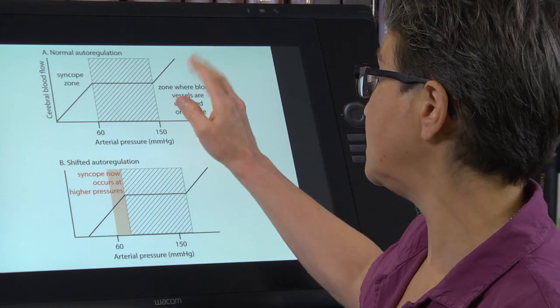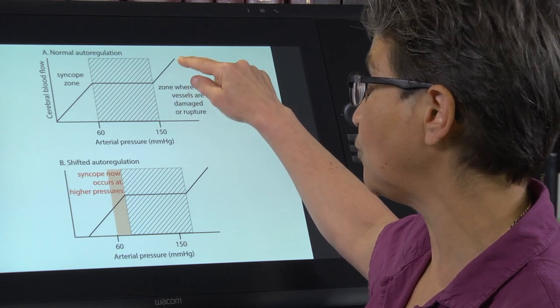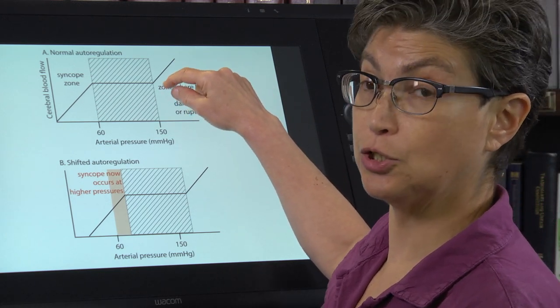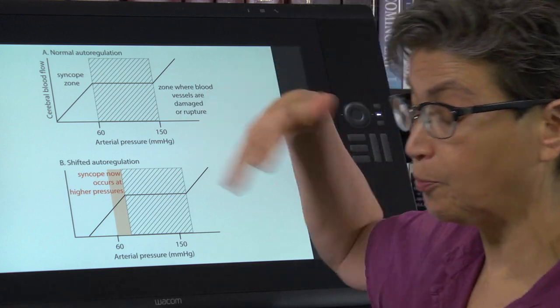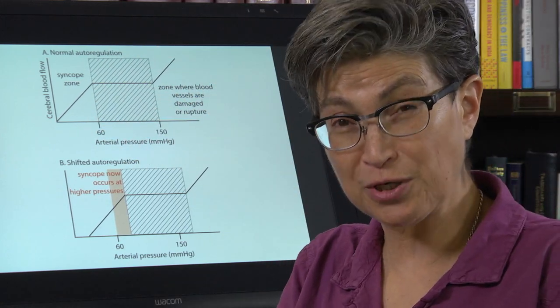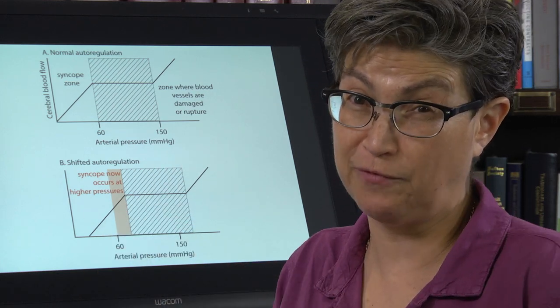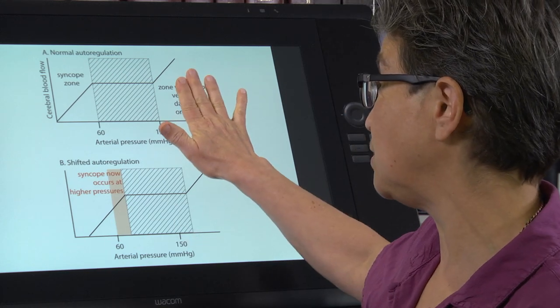On the other end, if blood pressure is too high and cerebral blood flow gets to, cerebral perfusion pressure is too elevated. Well, the perfusion pressure will push through the blood vessels and they will actually burst. It's too much pressure on the blood vessels. So that's not good either.